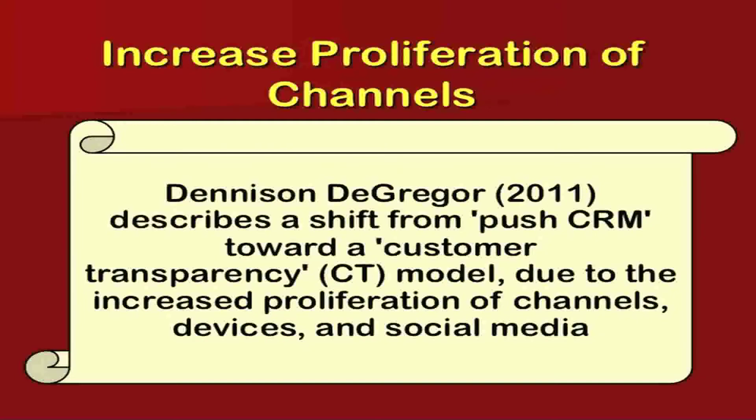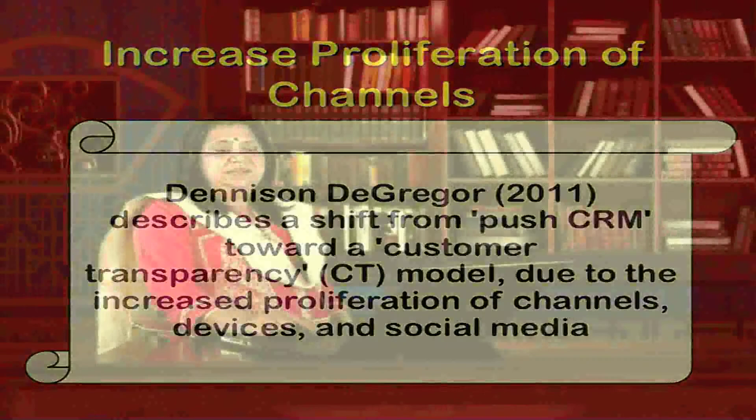Denison and D'Gregor in 2011 described the shift from a push CRM towards a Customer Transparency (CT) model due to the increased impact of channel devices and social media. This author defined that the CT model is a better solution to work in the market because your presence is designed and impacted through devices like Twitter or other social media and social communities.